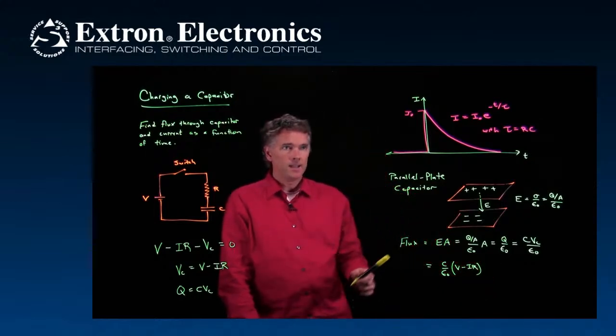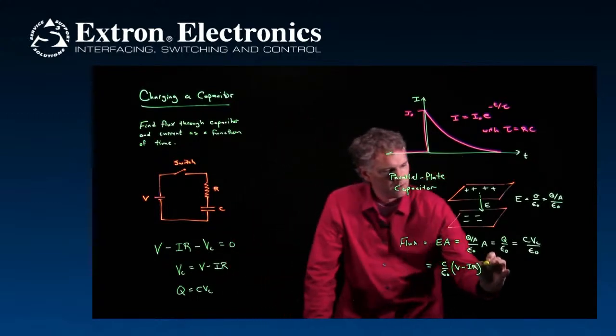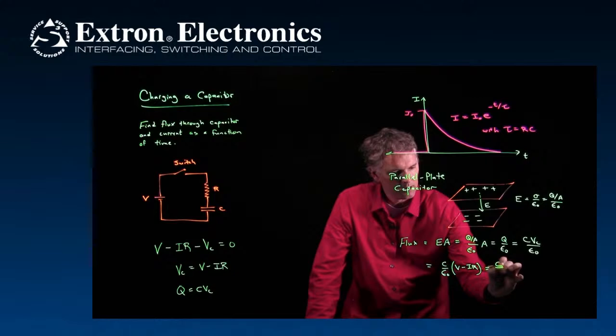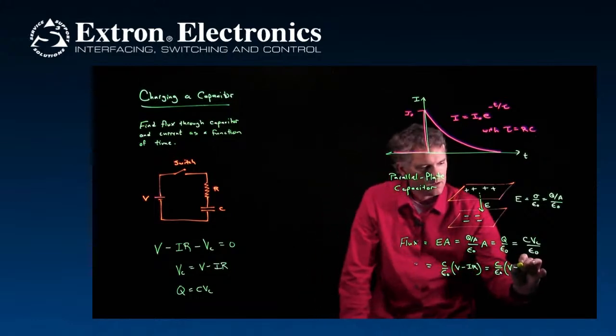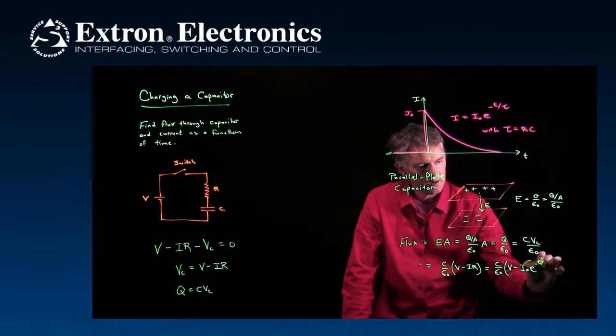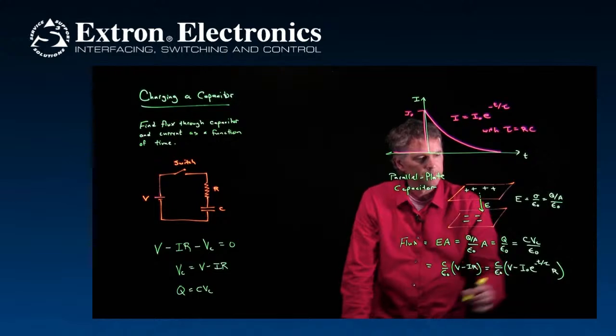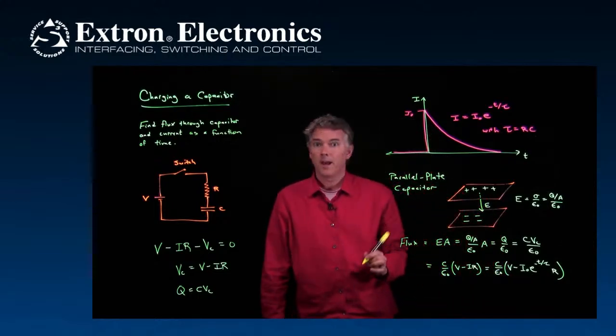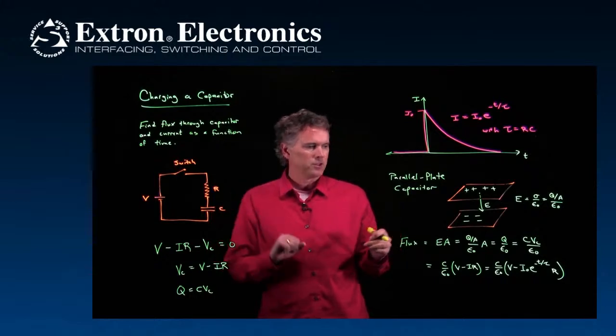So this becomes C over epsilon naught times V minus IR. But I is given by this thing right here. What does this all become? We get C over epsilon naught times V minus I naught E to the minus T over tau. And then we've got to multiply that stuff by R. So now this is the flux through the capacitor as a function of time.